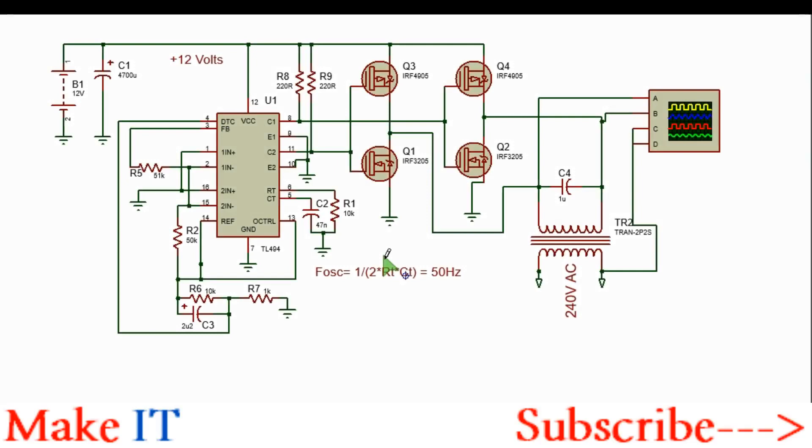Hi, let's talk about how you can easily make a 750 watt inverter with the TL494 pulse width modulation IC and an H-bridge made of power MOSFETs.